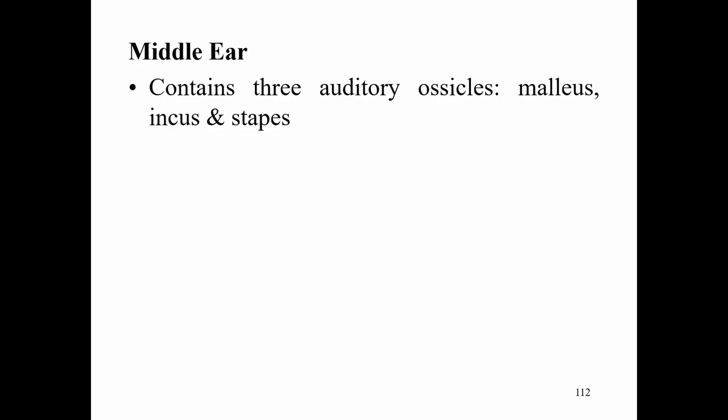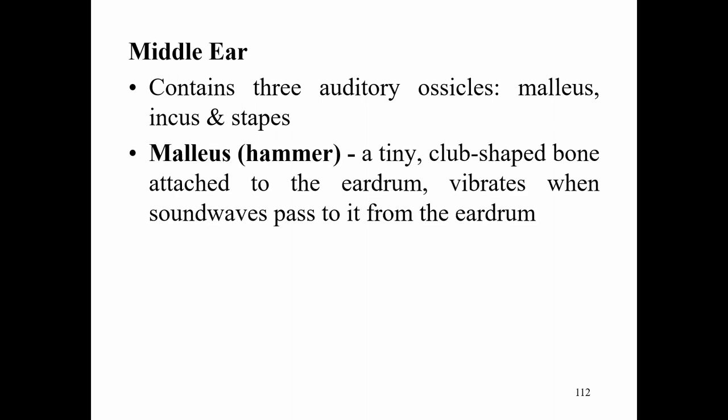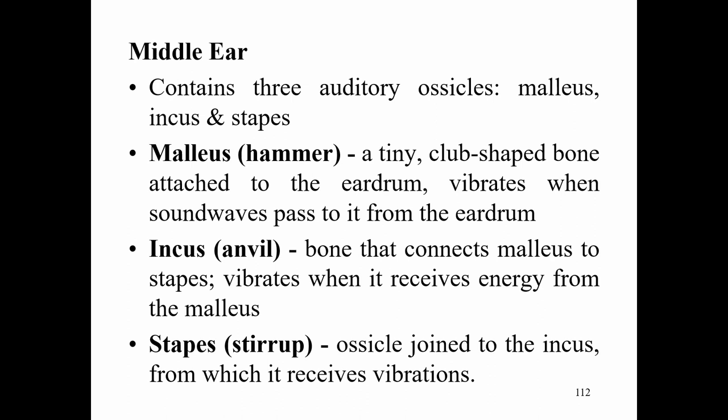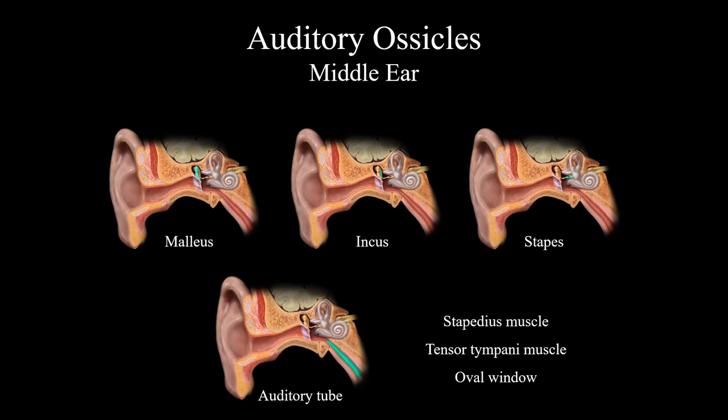The middle ear contains three auditory ossicles — the smallest bones in the body. The malleus (hammer) is a tiny club-shaped bone attached to the eardrum that vibrates when sound waves pass through it. The incus (anvil) connects the malleus to the stapes and vibrates when it receives energy from the malleus. The stapes (stirrup) is joined to the incus and receives those vibrations. Sound energy passes in order: malleus, then incus, then stapes.